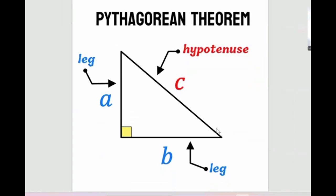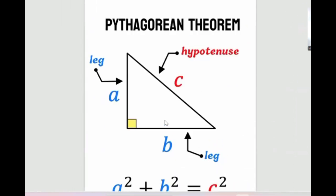Pythagorean theorem — you know this one. It works on right triangles only. The two shorter sides we name them legs, while the long side that faces the 90 degree angle we call the hypotenuse.